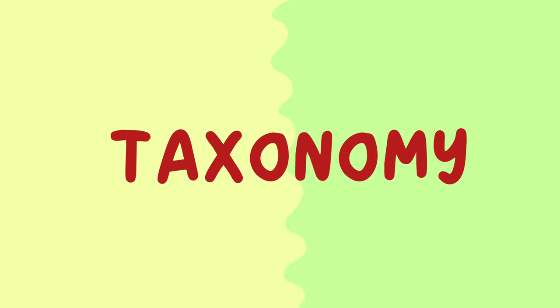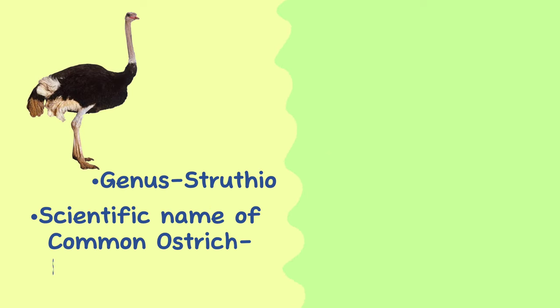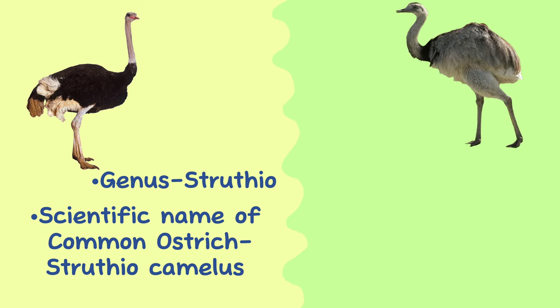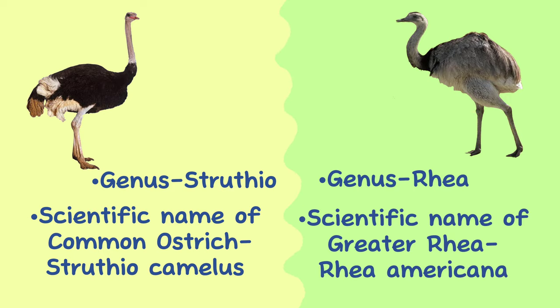Taxonomy. Ostriches belong to the genus Struthio, and the common ostrich is known as Struthio camelus. Rheas belong to the genus Rhea, and the greater Rhea is known as Rhea americana.